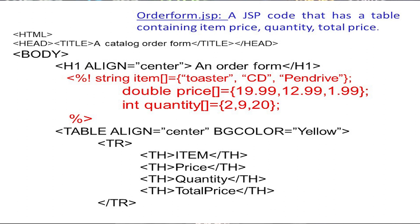Now we design the table to display these array values. The table is aligned to the center with a yellow background. The first row of the table is the heading row.